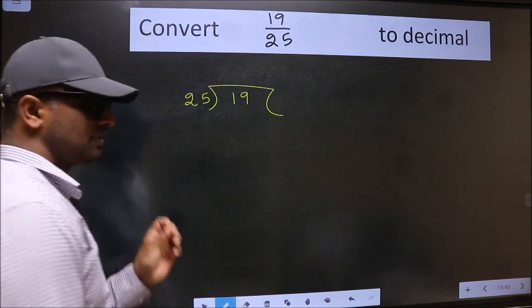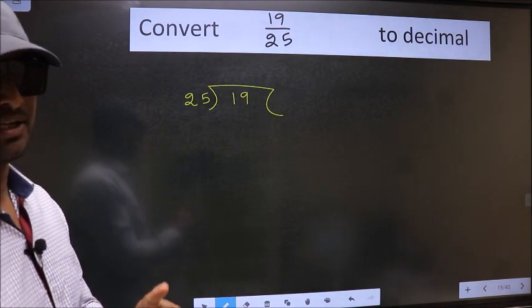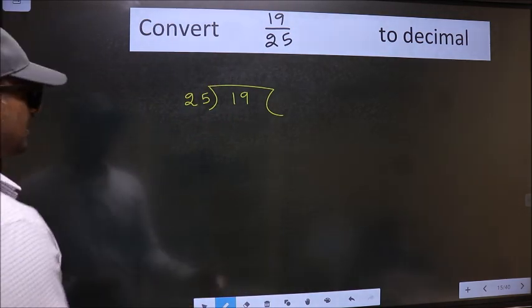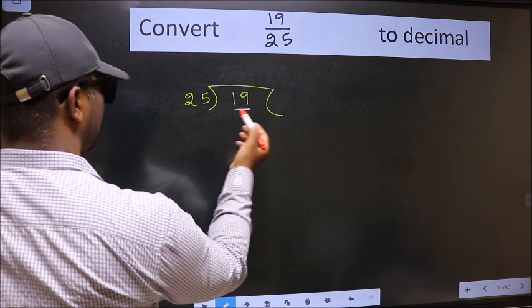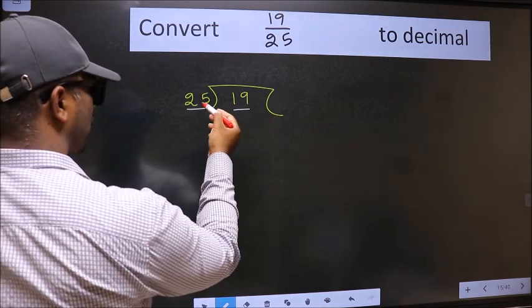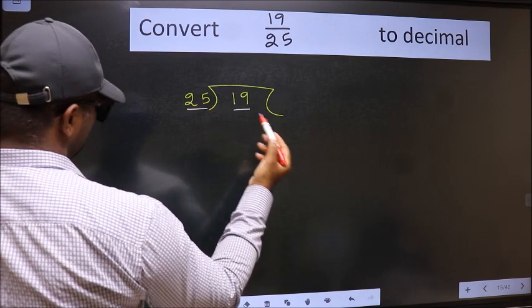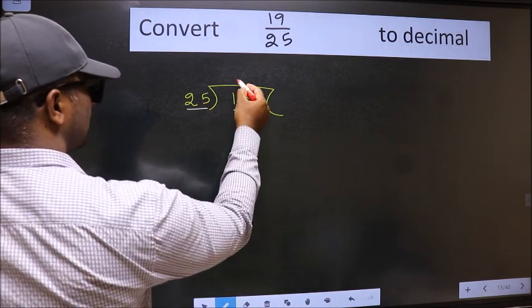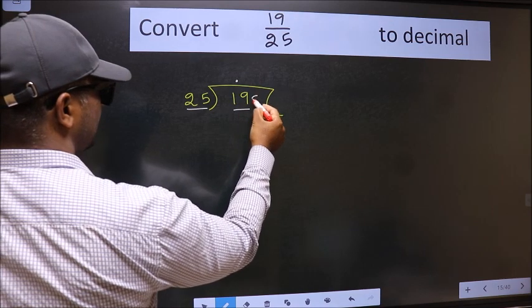This is your step 1. Next, here we have 19 and here 25. 19 is smaller than 25, so what we should do is put a dot and take 0.